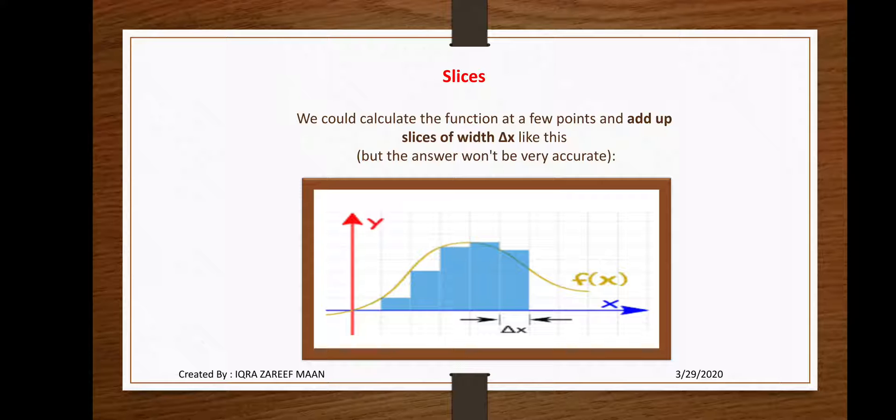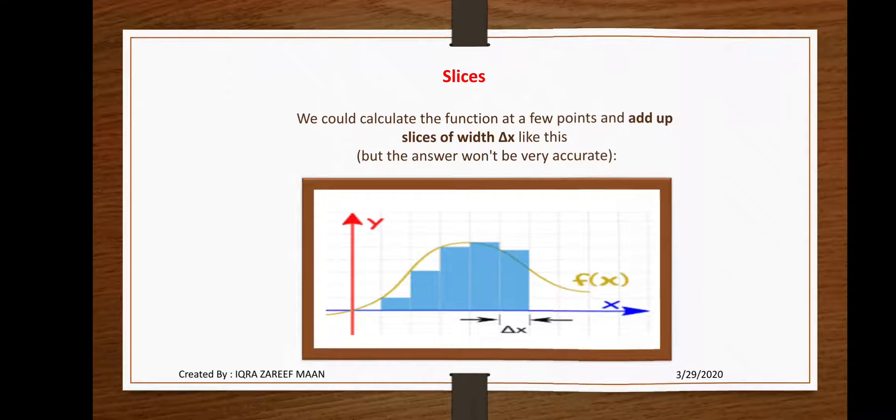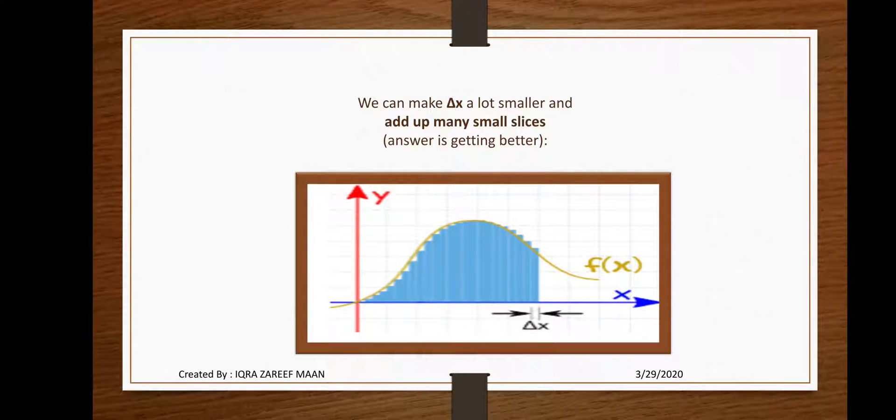Next we consider the width of slices is small. We can make Δx a lot smaller and add up many slices. The answer is getting better. As the width of slices become smaller and smaller, then the answer is much better.